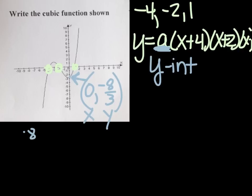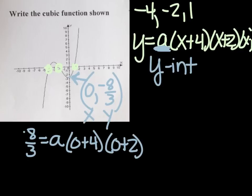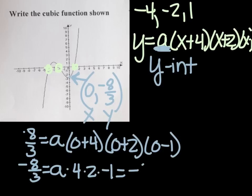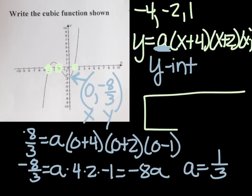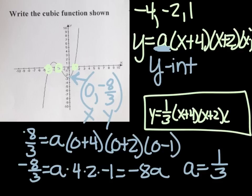So we're going to go negative eight-thirds equals a, zero plus four, because see I'm putting a zero in for x, zero plus two, and zero minus one. Which means negative eight-thirds equals a times four times two times negative one, which would be negative eight a. So if I divide negative eight-thirds by negative eight, I'm going to get a positive one-third.